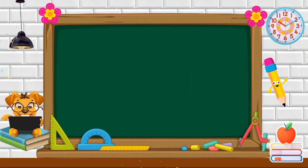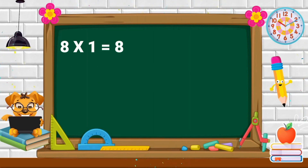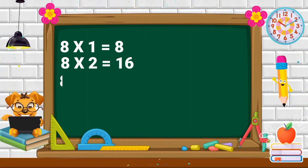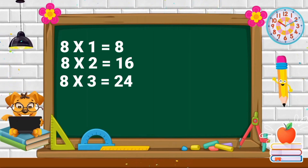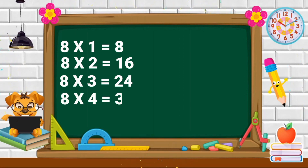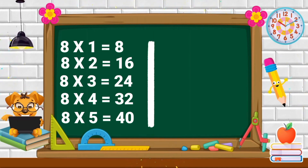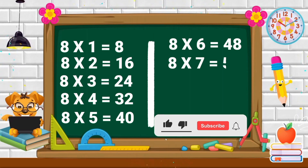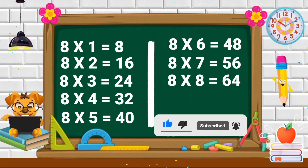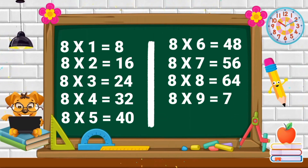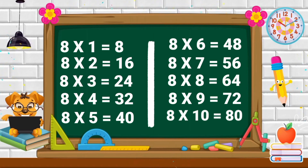Repeat again. 8 ones are 8. 8 sevens are 56. 8 eights are 64. 8 nines are 72. 8 tens are 80.